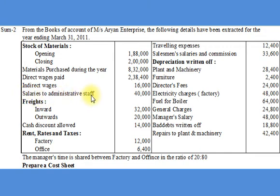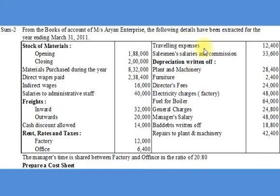Indirect wages is an element of factory overheads. Salaries to administrative staff is an element of administrative overheads. Outward freight is an element of selling and distribution overheads. Cash discount allowed will not be considered in the cost statement because it is a financial cost. Rent, rates and taxes for factory will be recorded as a factory cost, and for office under administrative overheads. Travelling expenses will be recorded under selling and distribution expenses. Salesman's salary and commission under the same head — selling and distribution. Depreciation on plant and machinery under factory overheads; on furniture under administrative overheads. Director fees will be recorded under administrative overheads.